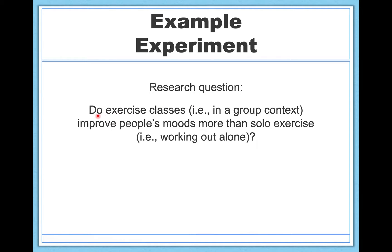Here's an example of a between-subjects design. My research question is: do exercise classes improve people's moods more than exercising alone? I have two different groups — people exercising in a group and people working out alone. I'm going to measure some form of mood, maybe anxiety or happiness. I want to know: does the average mood differ between people who work out in a group and people who work out alone? This is appropriate for an independent samples t-test.